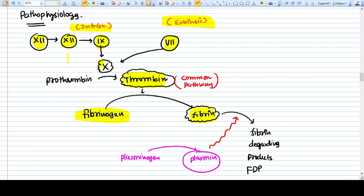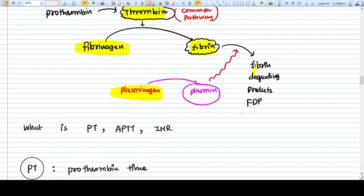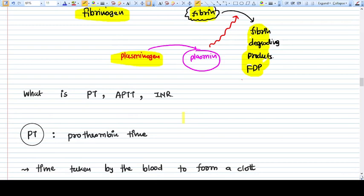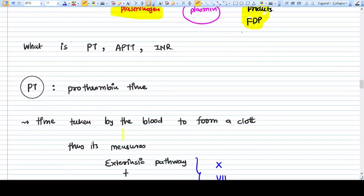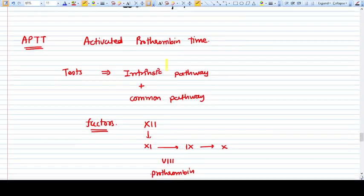Fibrin can again be degraded by plasminogen, which is an inactive form of plasmin, into fibrin degrading products. I'm not going in detail about PT, aPTT, and INR in this video because this video is particularly for DIC. I'm posting another video where you'll get the whole information about PT, aPTT, and INR - international normalization ratio. I'm keeping that part for another video.